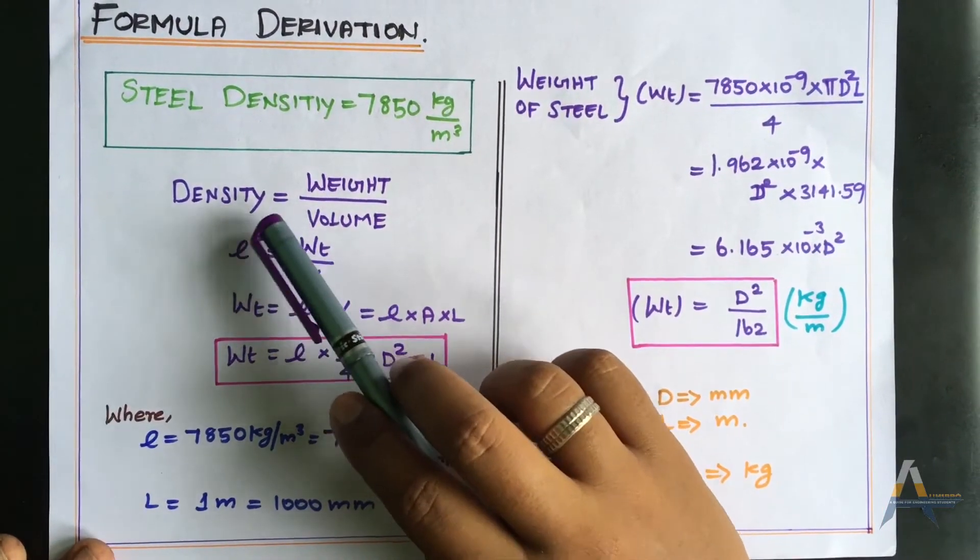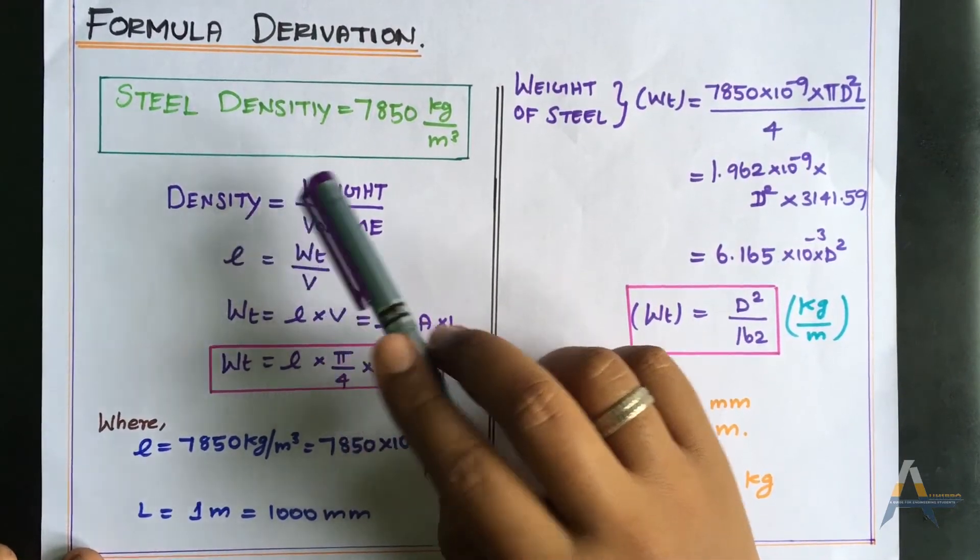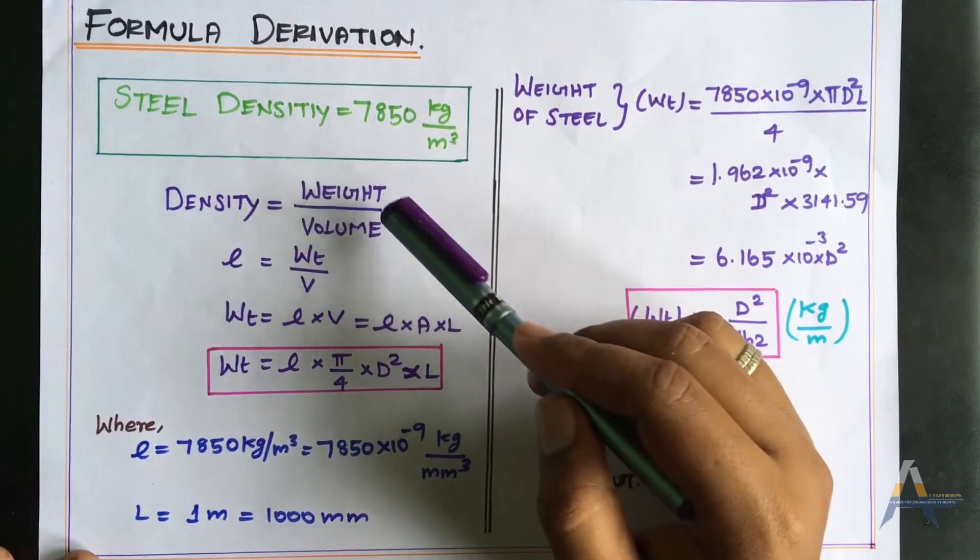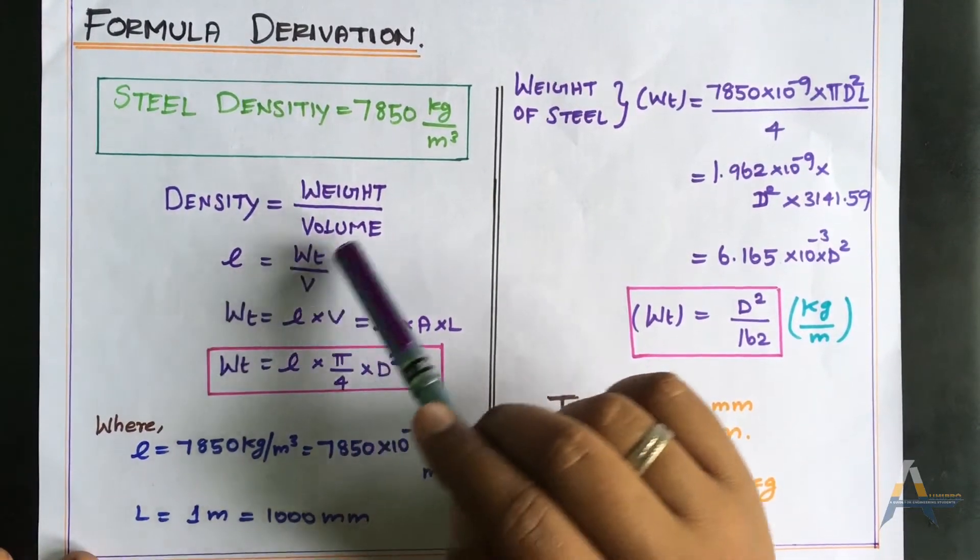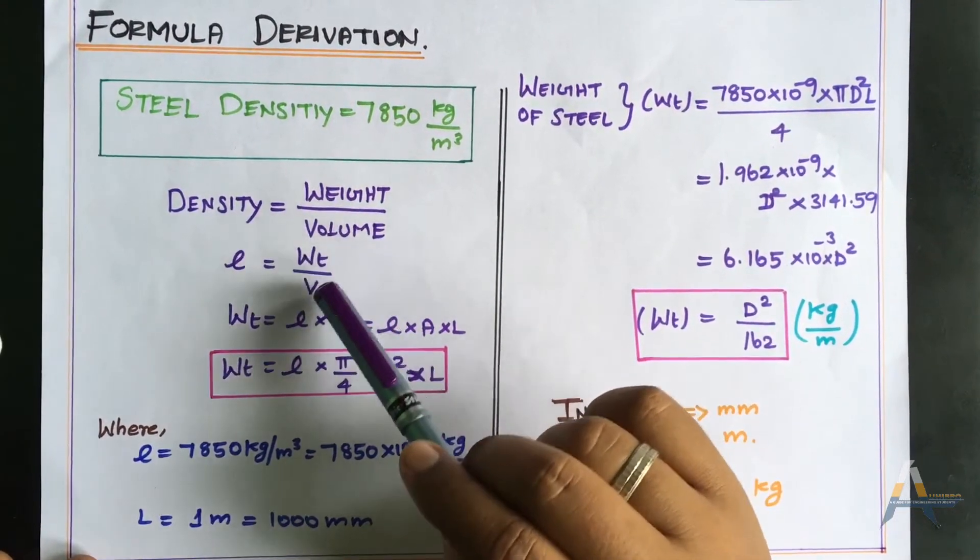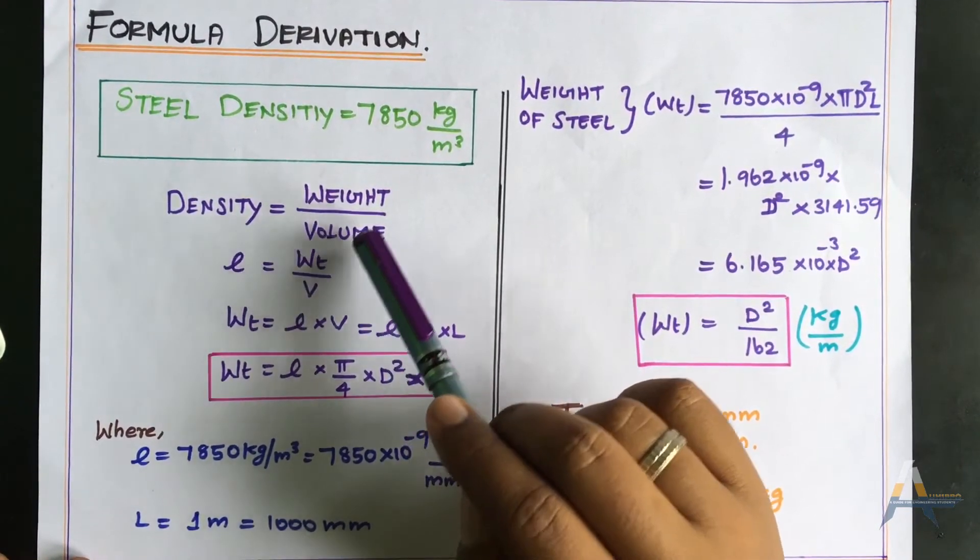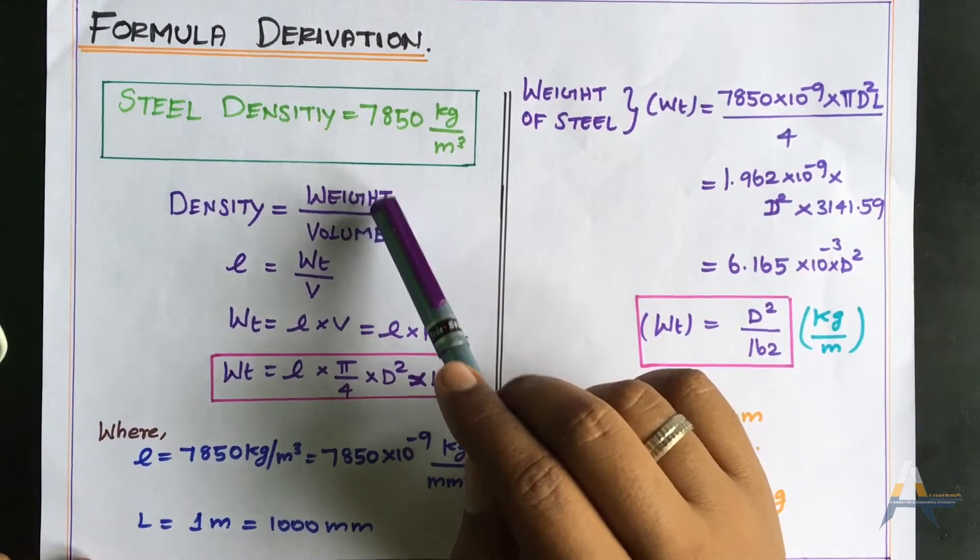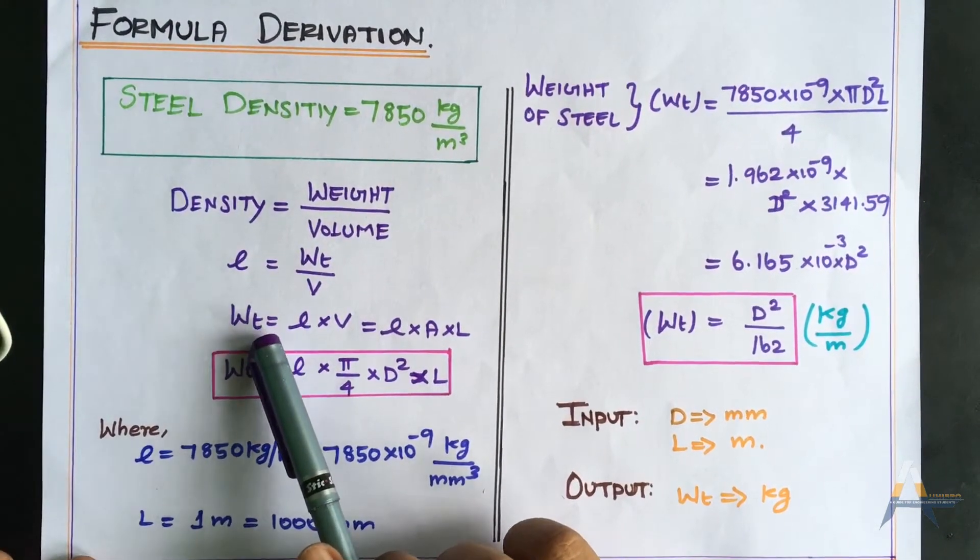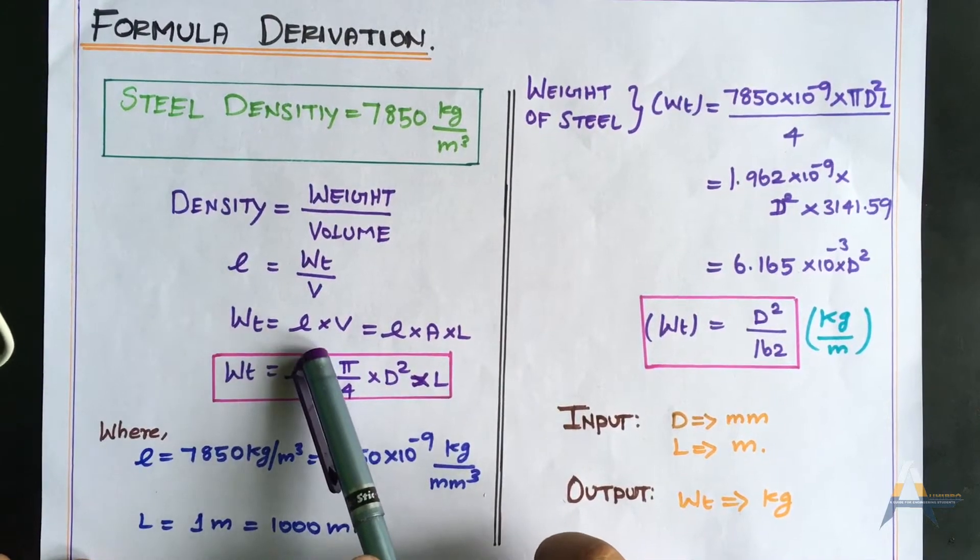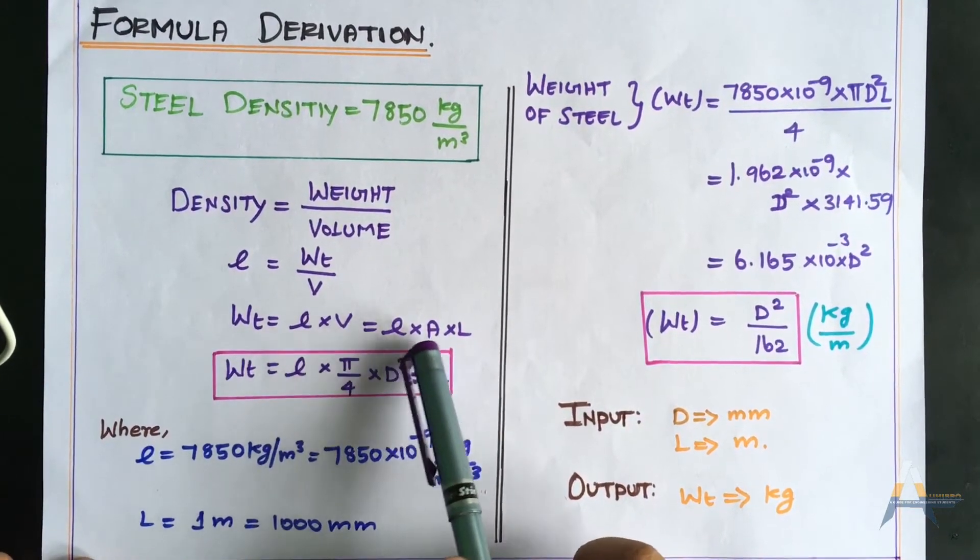We know density equals weight divided by volume. Using density as ρ, weight as Wt, and V for volume, we rearrange to get weight equals density times volume. Volume is area times length.